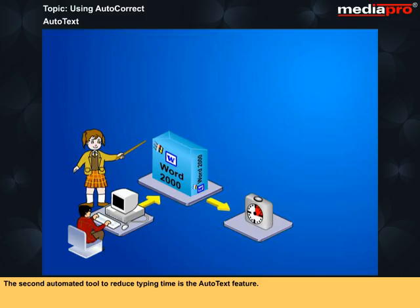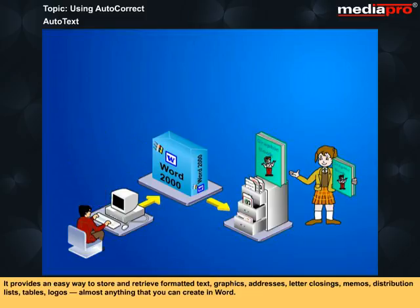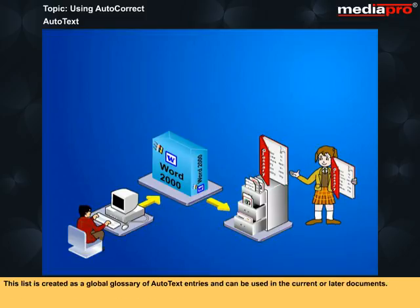The second automated tool to reduce typing time is the AutoText feature. It provides an easy way to store and retrieve formatted text, graphics, addresses, letter closings, memos, distribution lists, tables, logos — almost anything you can create in Word. This list is created as a global glossary of AutoText entries and can be used in the current or later documents.